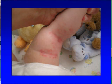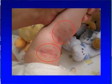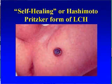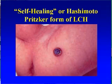Sometimes LCH looks like contact dermatitis — just redness of the skin, in this case behind the knees and in the fold of tissue on the thigh. Another presentation is brown or purplish bumps that can be anywhere on the body, sometimes literally thousands of them. This type has sometimes been called a self-healing or Hashimoto-Prisker form of the disease. But children who present with this should be watched carefully, because half of them will have evidence of disease elsewhere. We don't want to be cavalier and assume it will be a simple problem.